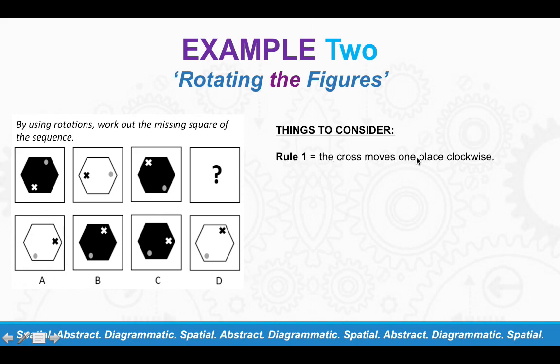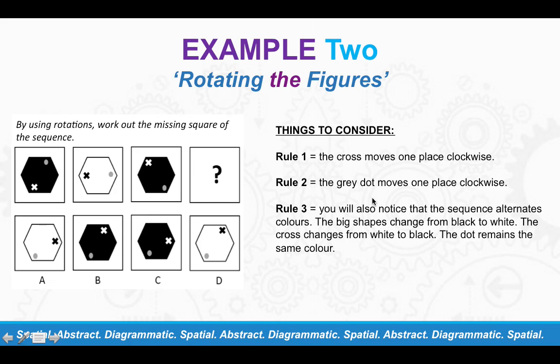So let's look at rule number one. The cross moves one place clockwise. So here we've got, it starts in the bottom left, it moves one space to there, and then moves one space again clockwise. So you know that that cross there has to be in this position there for this one. So you know it's not going to be answer A now, and you know it's not going to be B and C because you've already ruled those out. So the answer is going to be D. And you can see we've not even had to go through these rules because you've already eliminated a few of the answers. You know that the answer is going to be D.